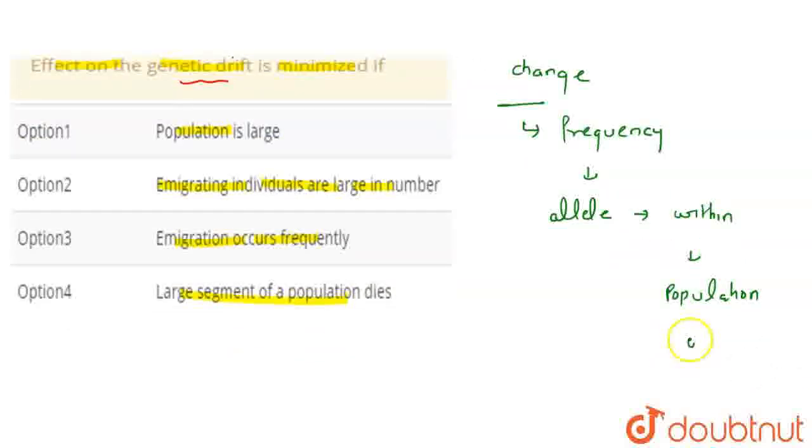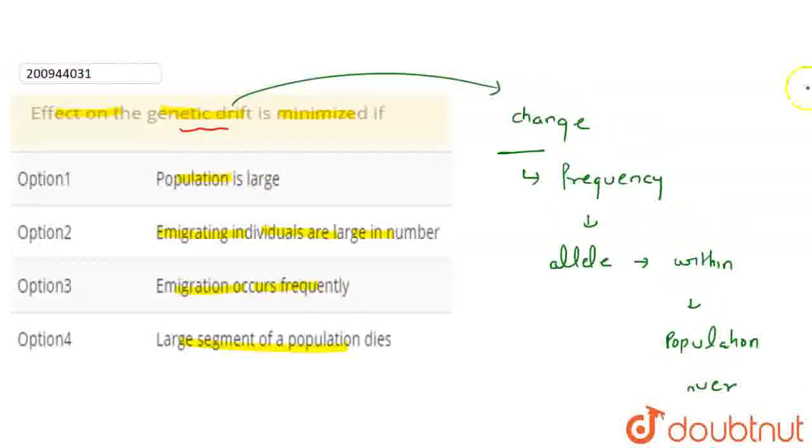So population allele frequency changes. Genetic drift is the mechanism where allele frequency changes over generations due to chance.